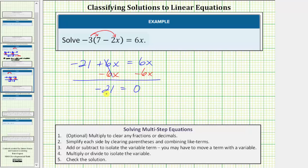But this time the equation is false. Negative 21 does not equal zero. So because the resulting equation is false, this indicates the original equation has no solutions.